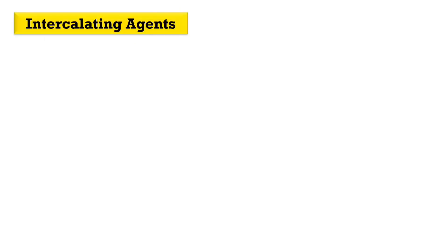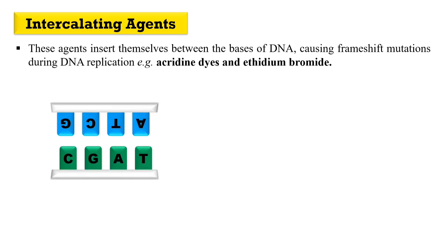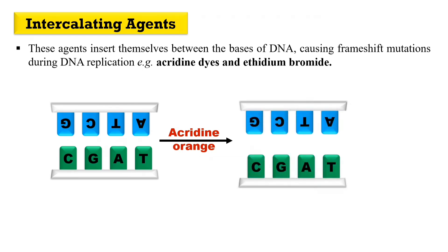The next type of chemical mutagen is intercalating agents. Intercalating means they insert themselves between the DNA base pairs, causing frameshift mutations and errors during replication. Examples include acridine dye and ethidium bromide. As you can see, acridine orange gets inserted between the base pairs and causes errors in replication, resulting in the creation of mutations in the DNA.